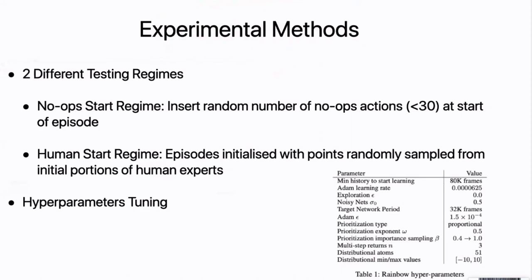There are also two testing regimes. The first is no-ops: at the start we insert a random number of no-op actions — basically do nothing at the start of the game. The other is the human start regime, where they take note of the actions human experts do and start the algorithm from that point, playing whatever actions the human did. There's also quite a lot of hyperparameter tuning as seen here.